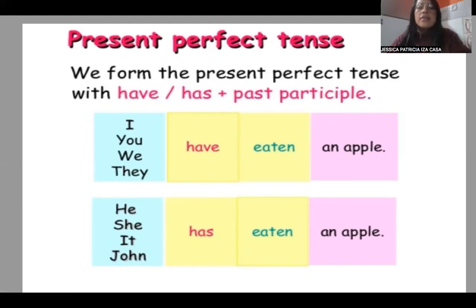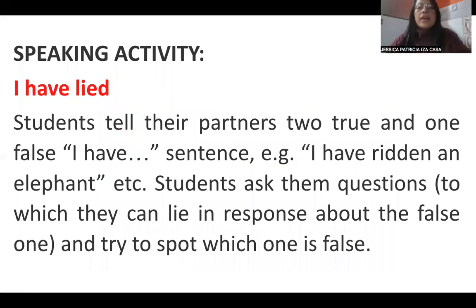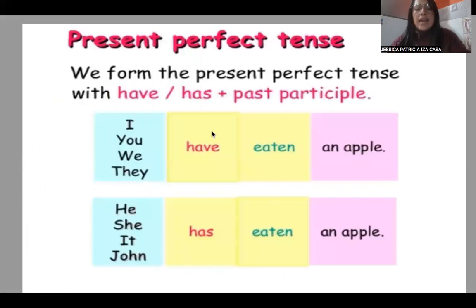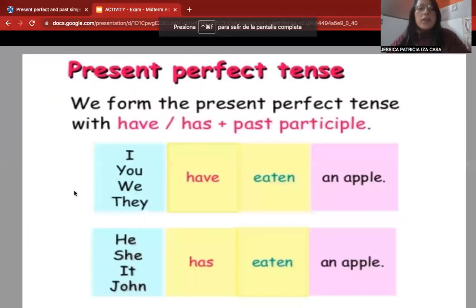In our class we are going to do a speaking activity to practice present perfect with a game. In this game, students tell their partners two true sentences and one false sentence using 'I have' or 'I haven't' — the negative form.